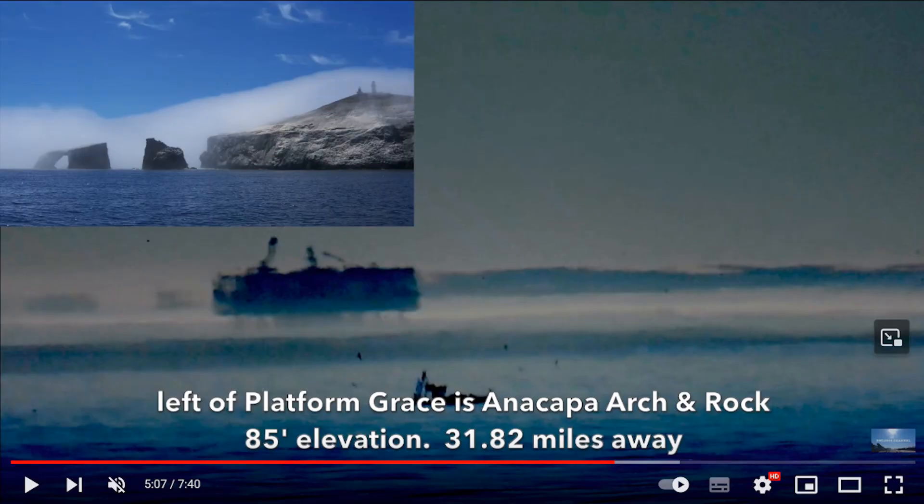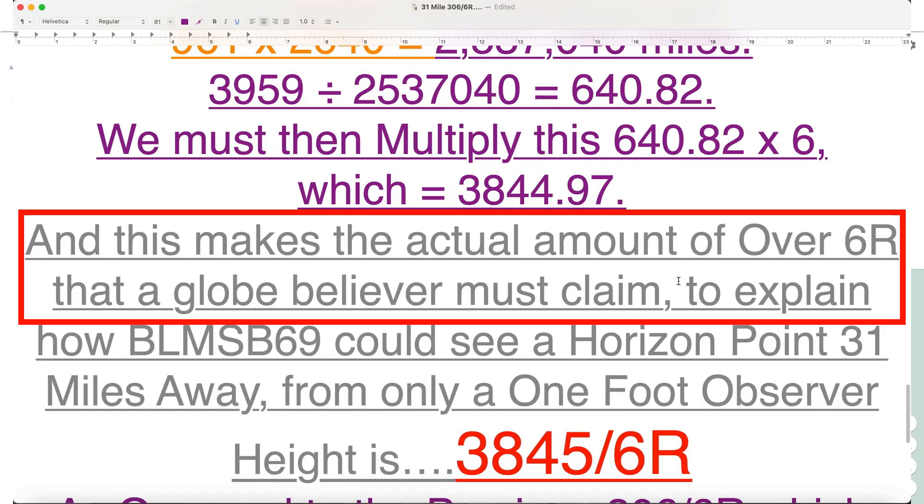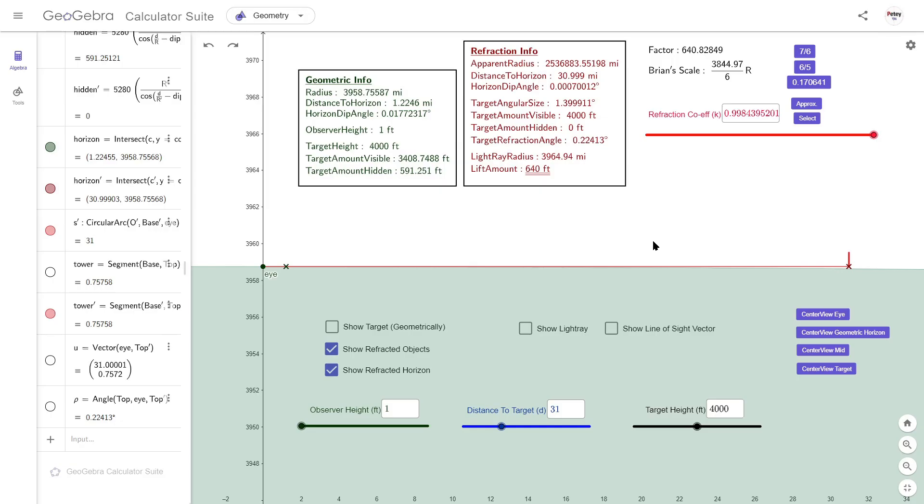What Brian will say next is something like, We see the coastline. We see our truck. Therefore, globe believers must claim at least 3,845 over 6R to explain this observation. And that's the flaw in his logic.